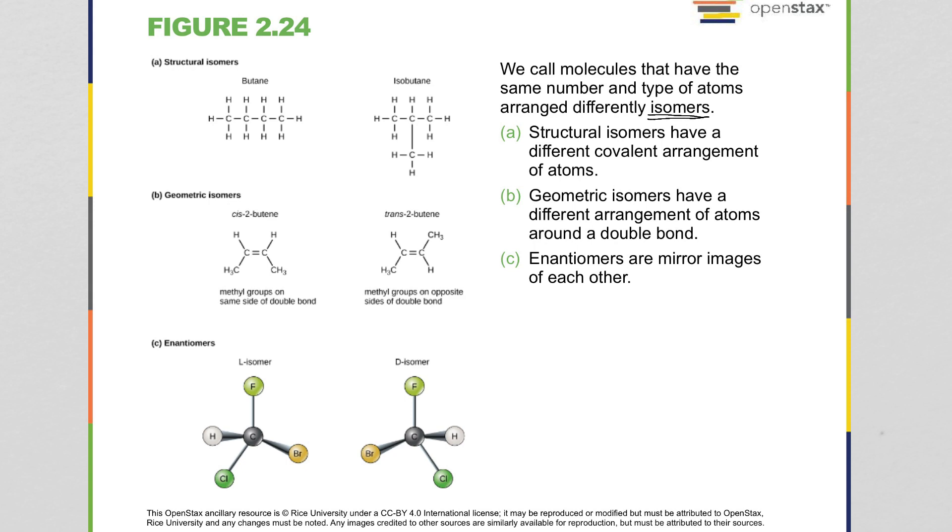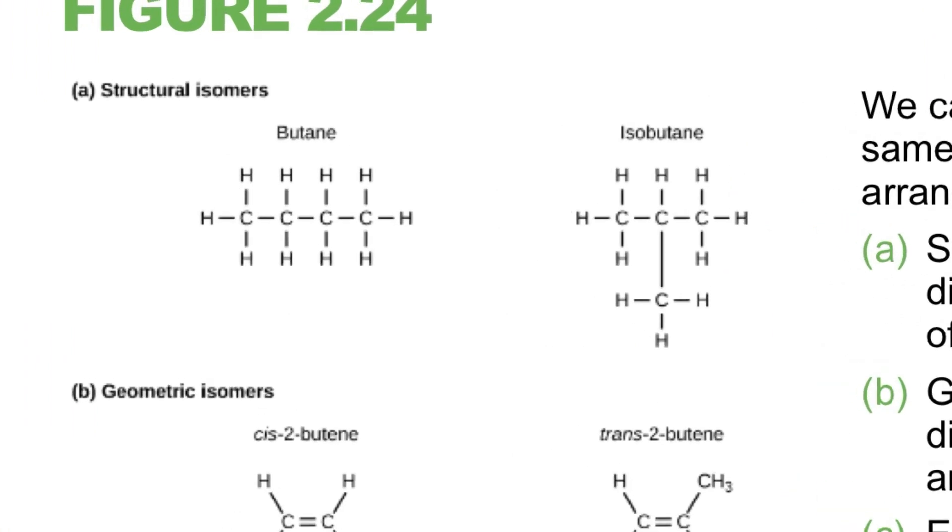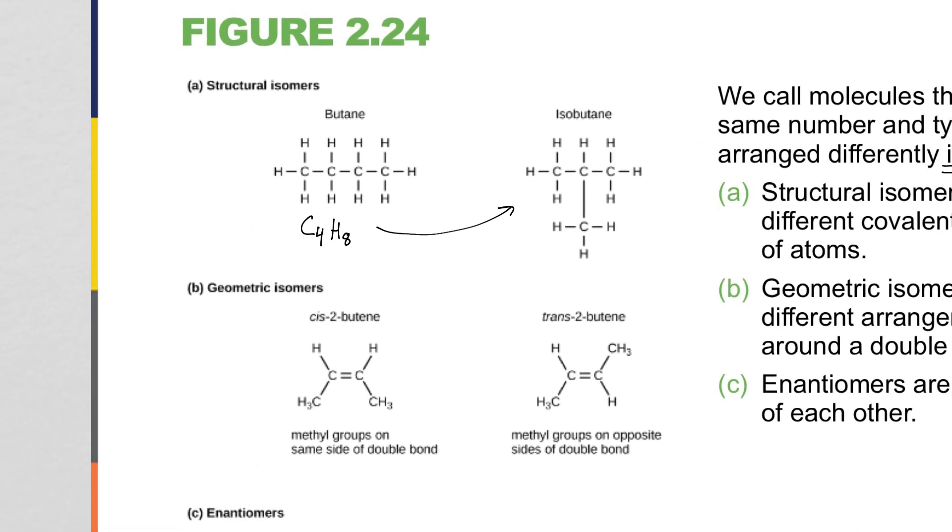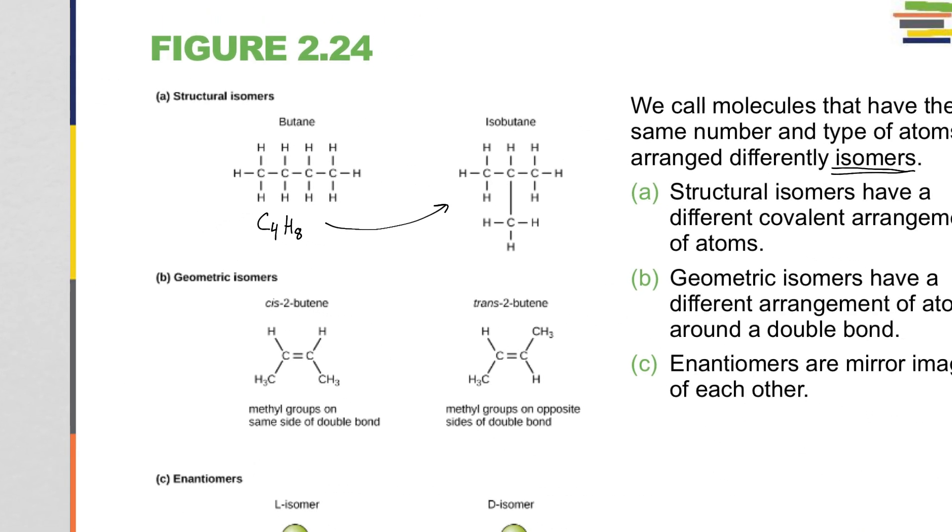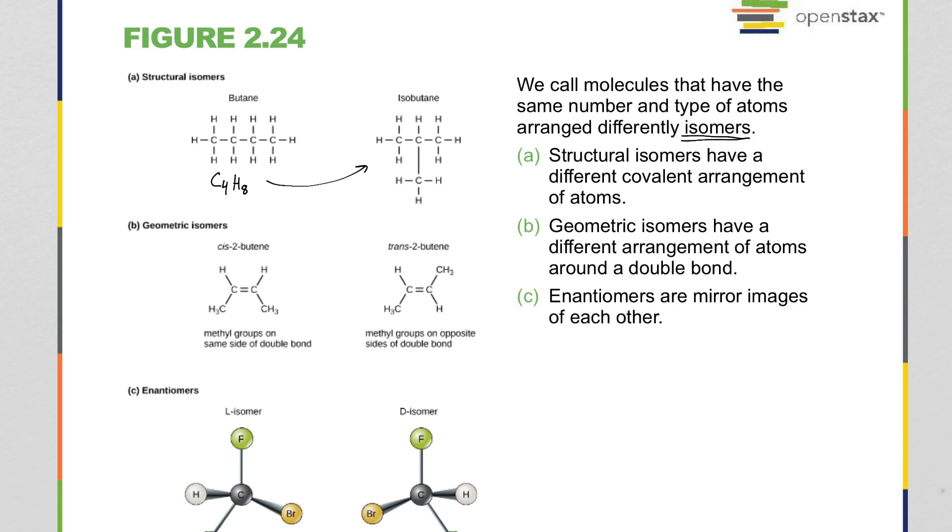So if you wrote them out in a chemical formula, for example, this butane you could write as C4H8, and this isobutane, exact same molecule, C4H8. The number of carbons and hydrogens isn't changing, but the arrangement of the atoms within the molecule is changing some way. And so that is your most basic definition of an isomer.